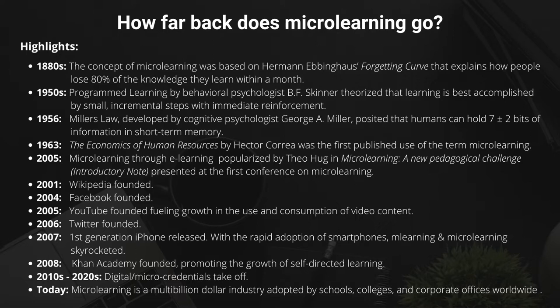Here are a couple of highlights on the history of microlearning. The actual concept of microlearning was based on Herman Ebbinghaus' Forgetting Curve, which explains how people lose about 80% of the knowledge they learn within a month. In the 1950s, B.F. Skinner came up with Programmed Learning, which theorized that learning is best accomplished by small incremental steps with immediate reinforcement. In 1956, George A. Miller came up with Miller's Law, which posited that humans can hold seven plus or minus two bits of information in short-term memory. These three theories give us an idea of why microlearning is more effective when it's short.